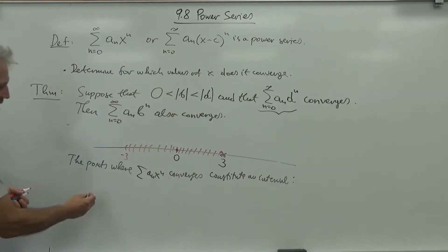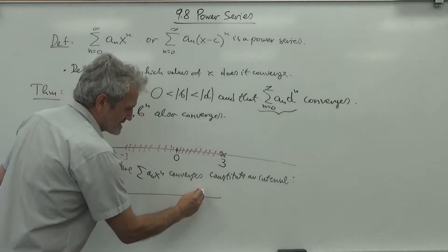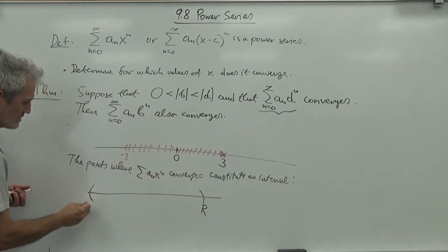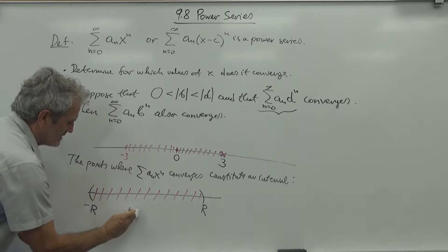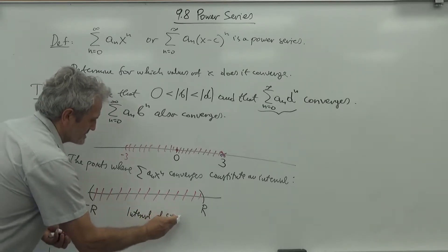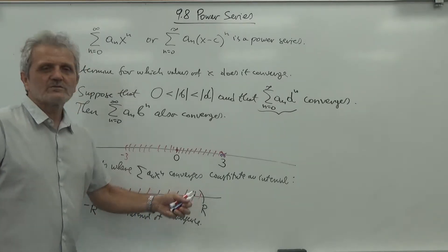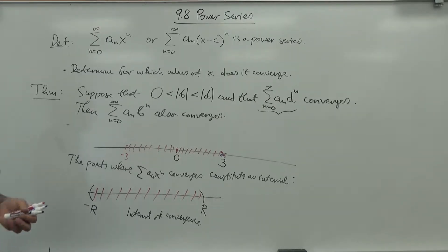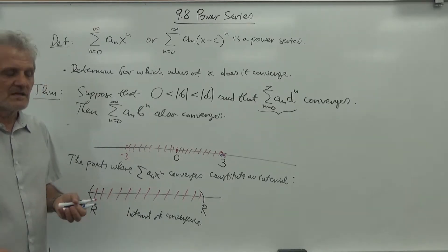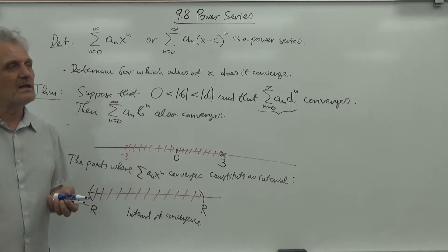If we take the supremum of all values where the series converges and call it R, then we know convergence occurs between negative R and R — this is the interval of convergence. The dilemma is what happens at R itself and at negative R. You cannot determine that in a universal way: sometimes it converges at both endpoints, sometimes one, sometimes neither.